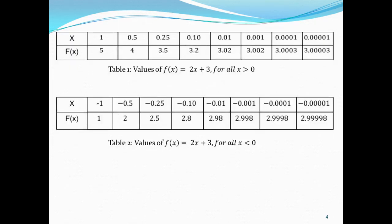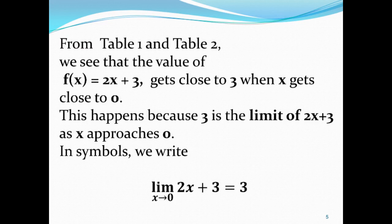Table 1 shows the values of f of x when x is greater than 0. Table 2 shows the values of f of x when x is less than 0. From table 1 and table 2, we see that the value of f of x equals 2x plus 3 gets close to 3 when x gets close to 0. This happens because 3 is the limit of 2x plus 3 as x approaches 0.